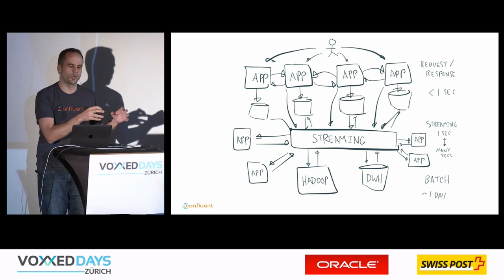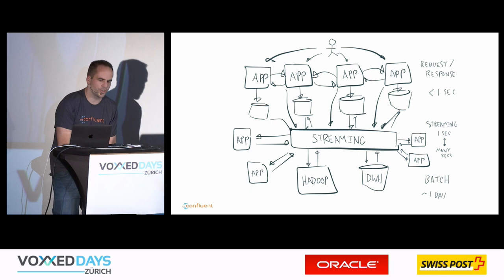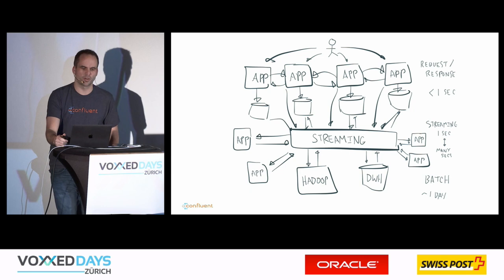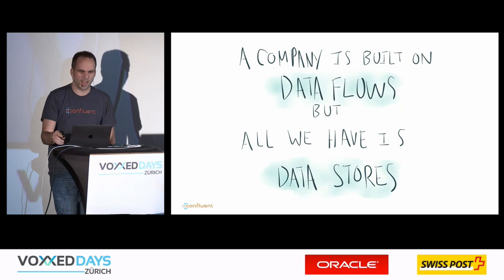Many companies now use Kafka as a central nervous system between all different components. This is a high-level overview without too much technology depth. There's also another talk later by Guido Schmitz going deeper into other technology components, so there's not much overlap, and I recommend attending both sessions.